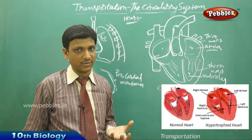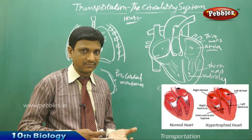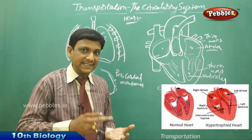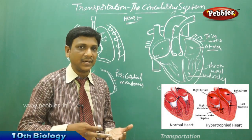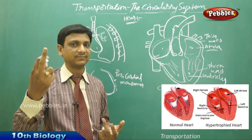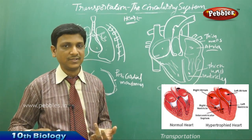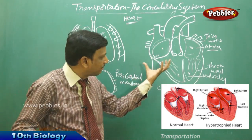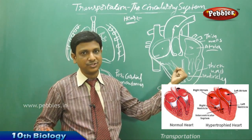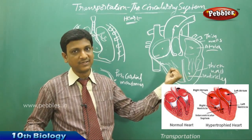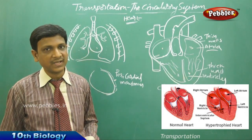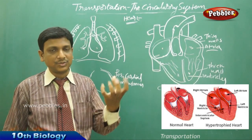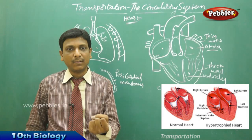At the same time, the heart also pumps deoxygenated blood to the lungs for oxygenation. In this way, the heart pumps blood to different parts for different purposes — collecting oxygenated blood and pumping it where needed.